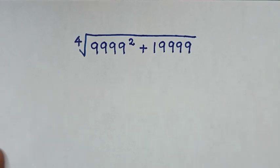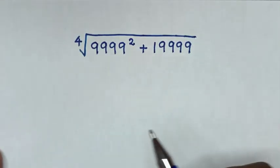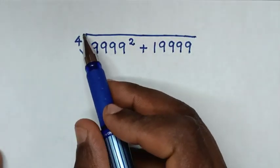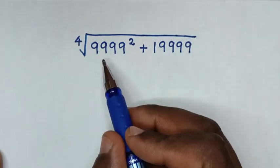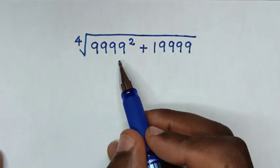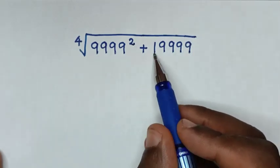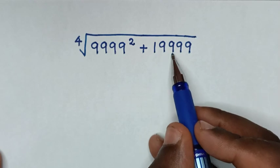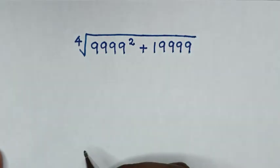Hello, you are welcome to solve this math problem, which is the 4th root of 9999 squared plus 19999.